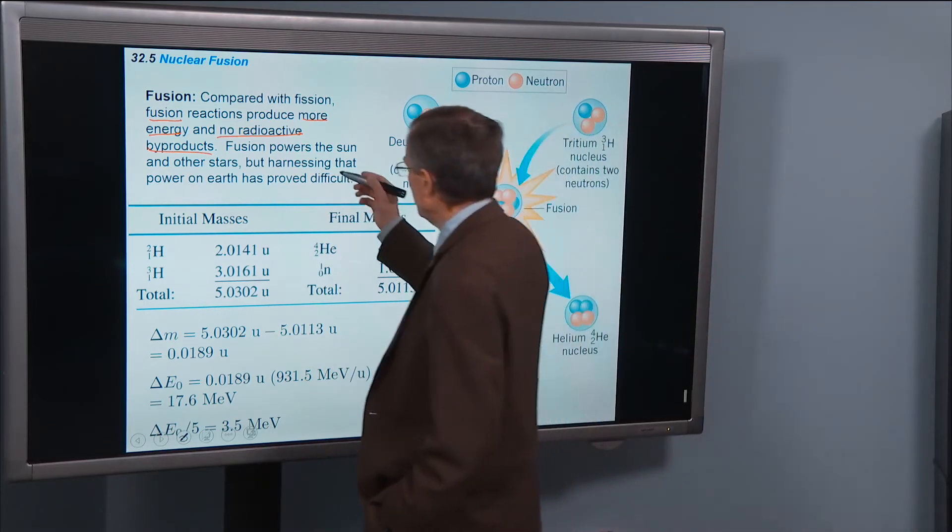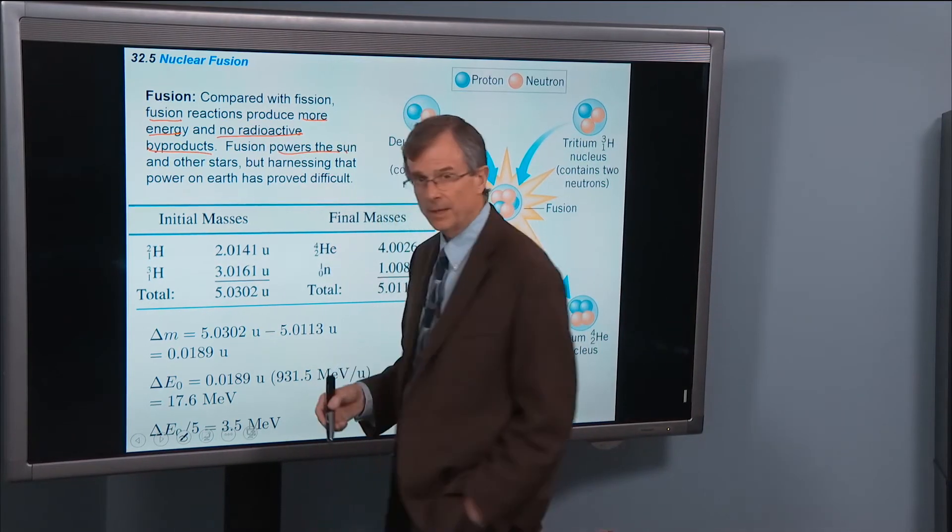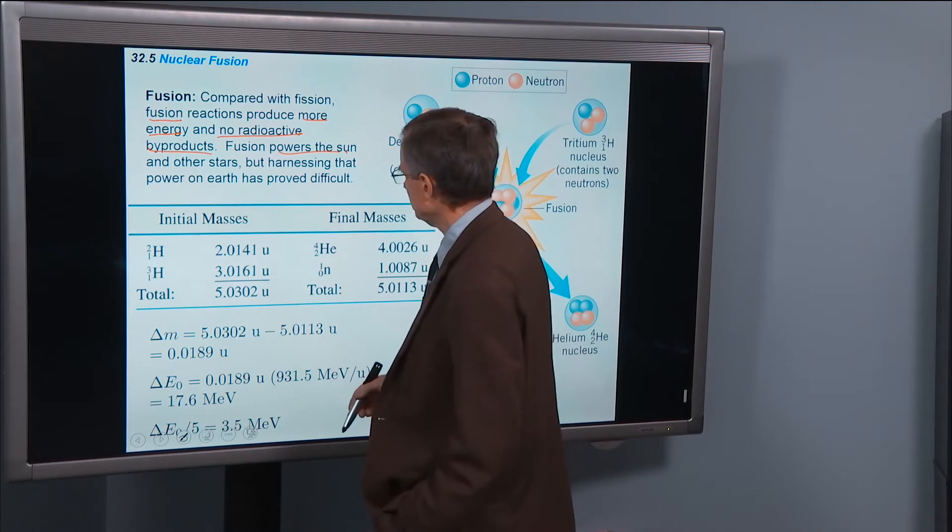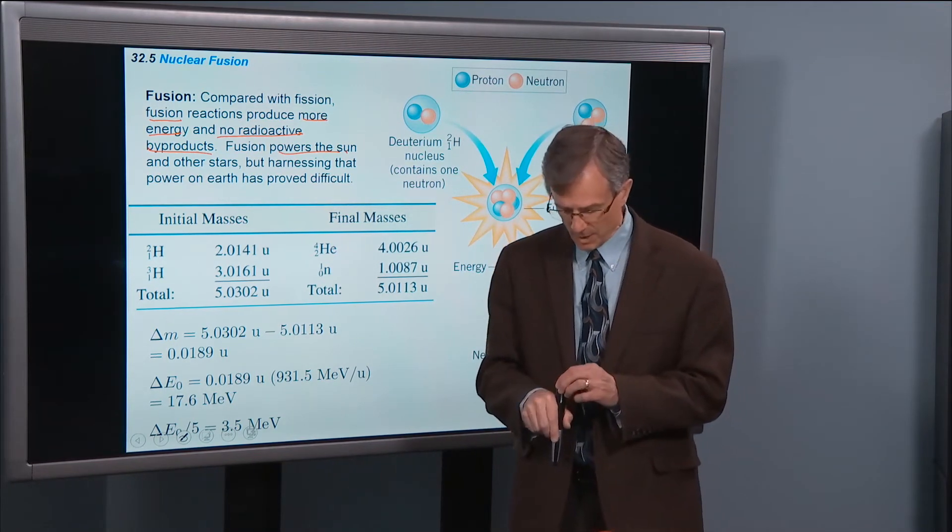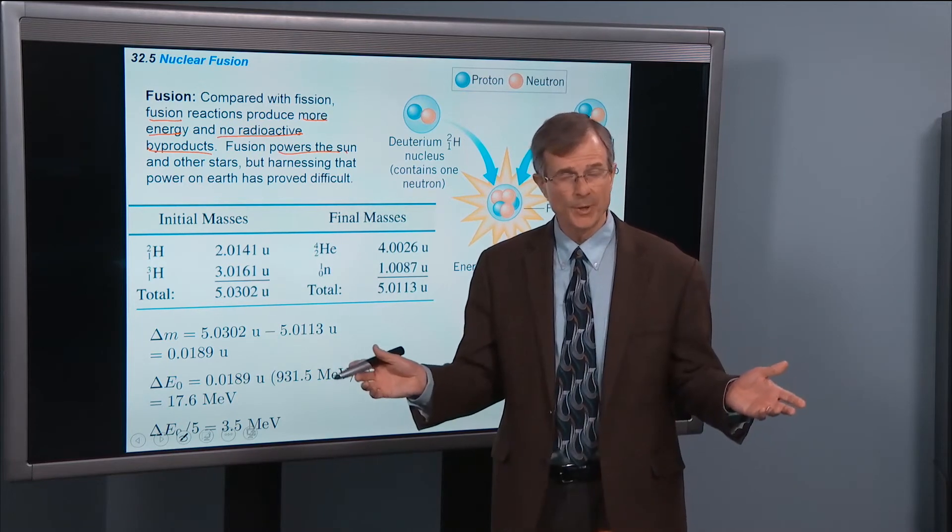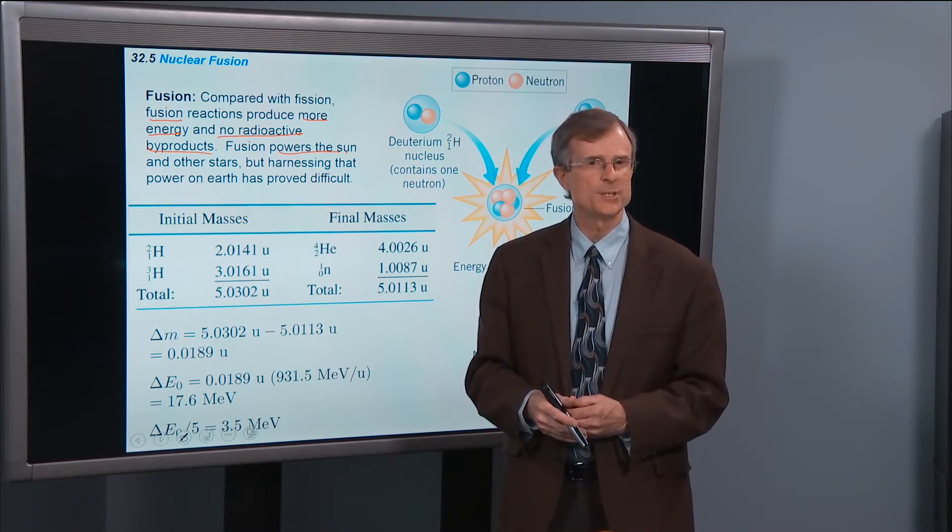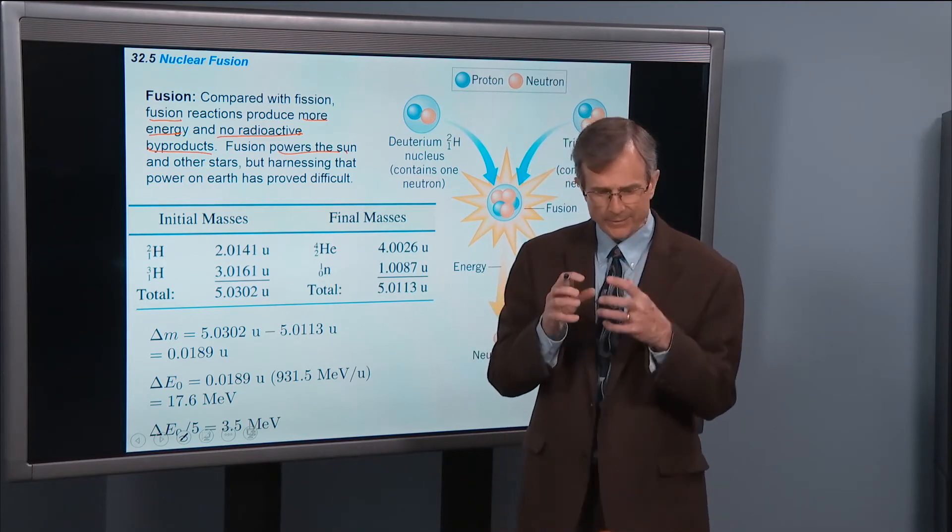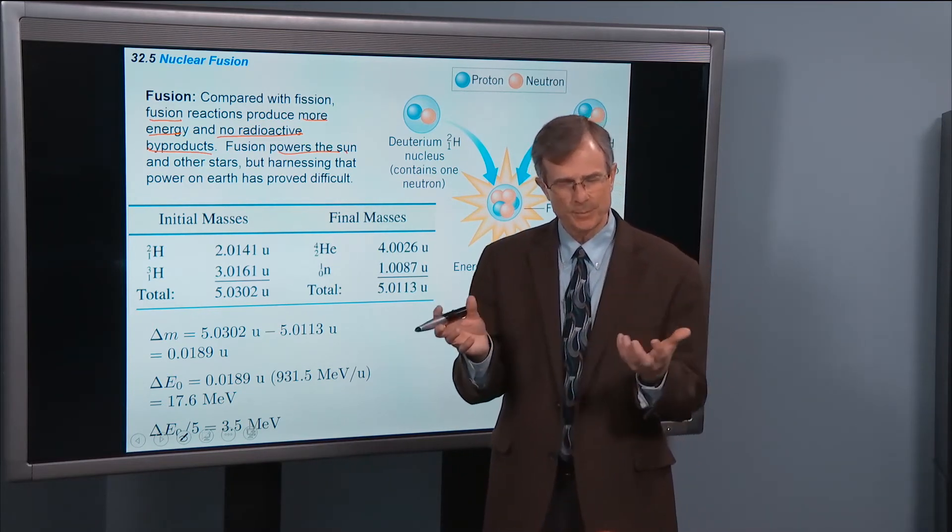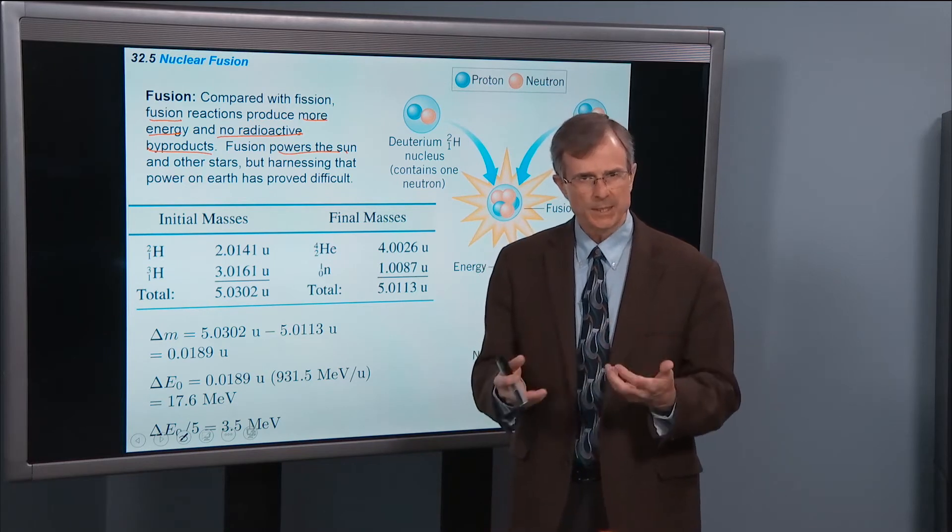Fusion, as we said before, it powers the sun and other stars. But harnessing that power on the earth has proved to be quite difficult. There are nuclear reactors on the earth right now, but they're all fission reactors. Taking uranium or some other heavy elements, splitting it apart to make lighter elements and getting some energy out.